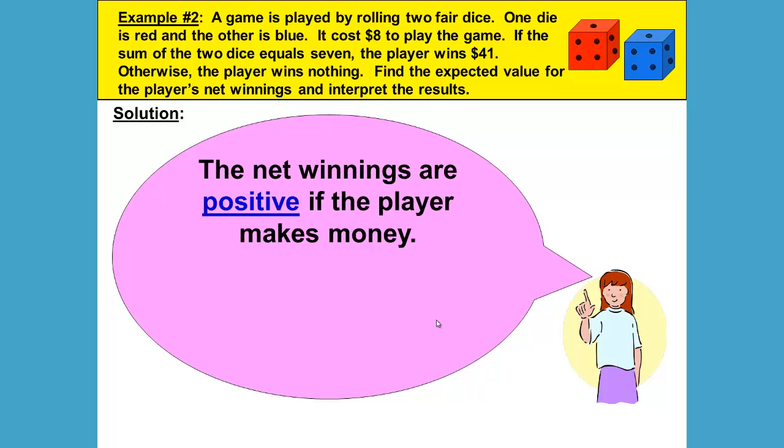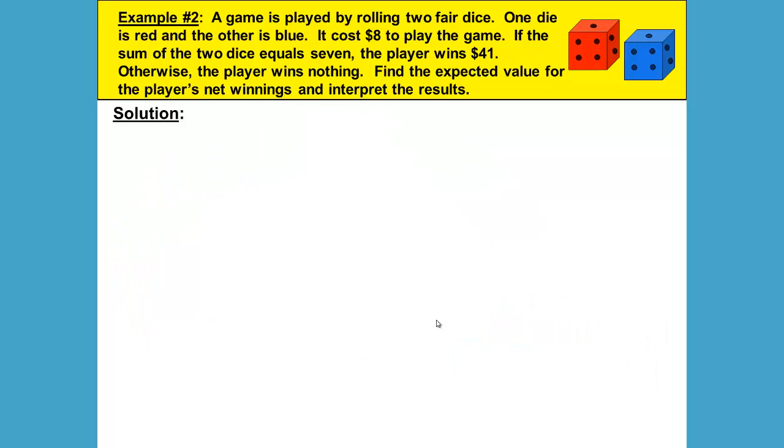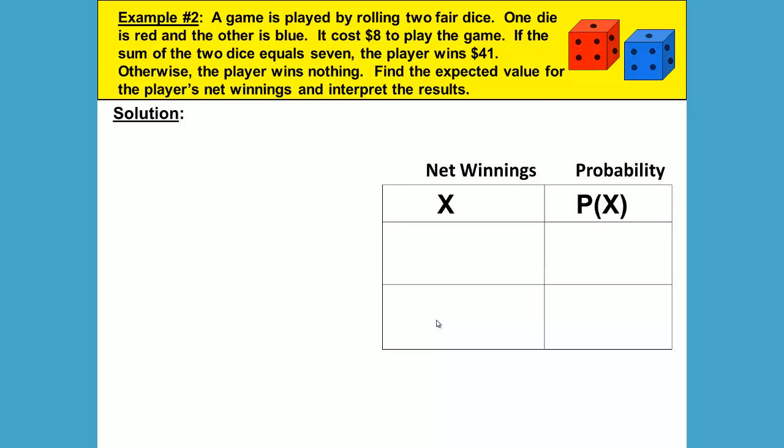The net winnings are positive if the player makes money and negative if the player loses money. The question asks us to find the expected value for the player's net winnings. The player rolls the dice and only two things can happen: the player wins by rolling a seven, or the player doesn't get a seven and gets nothing, therefore losing the eight dollars paid to play the game. So we have a probability distribution with two options under x.